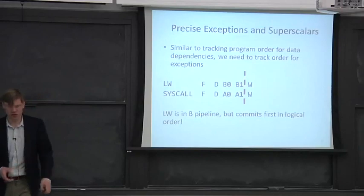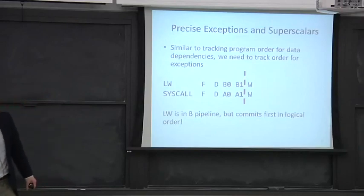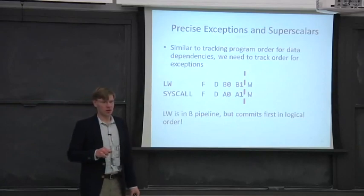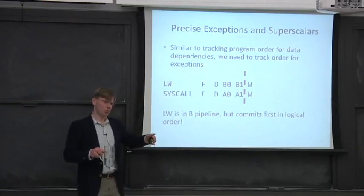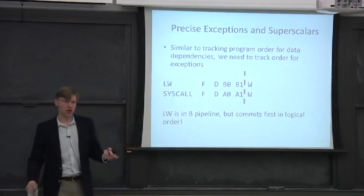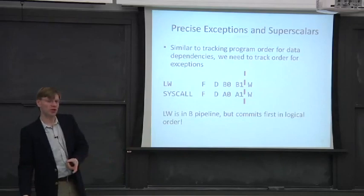So an important question comes up with something like a superscalar when you're executing multiple instructions at the same time: what happens when you fetch two instructions and one of those instructions takes an interrupt or an exception as it's going down the pipeline?